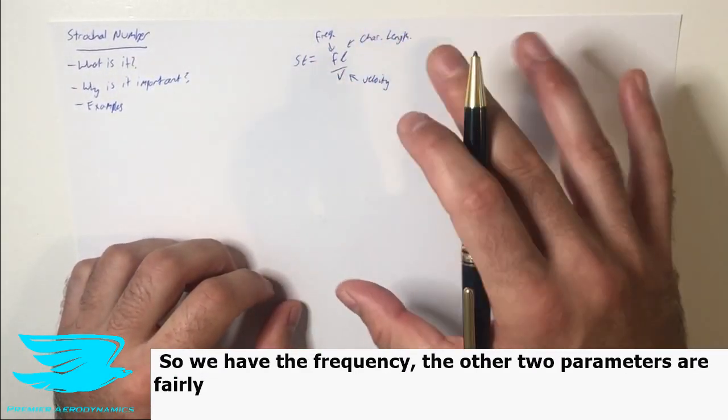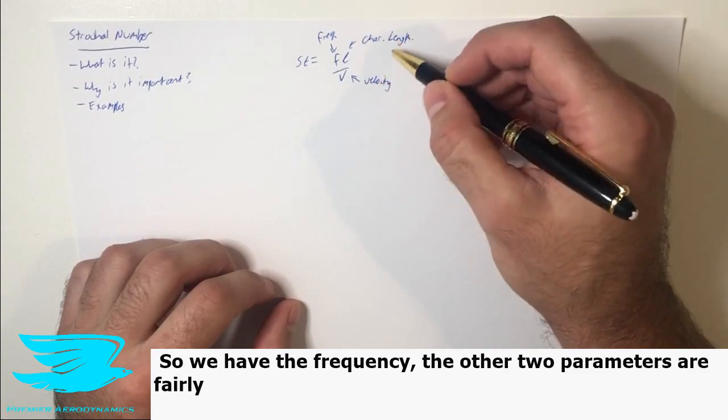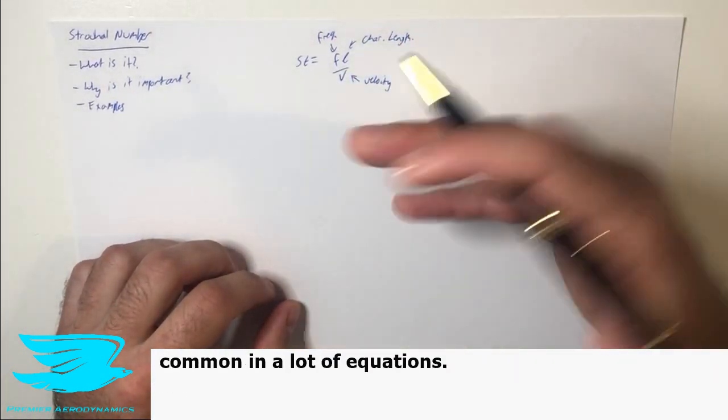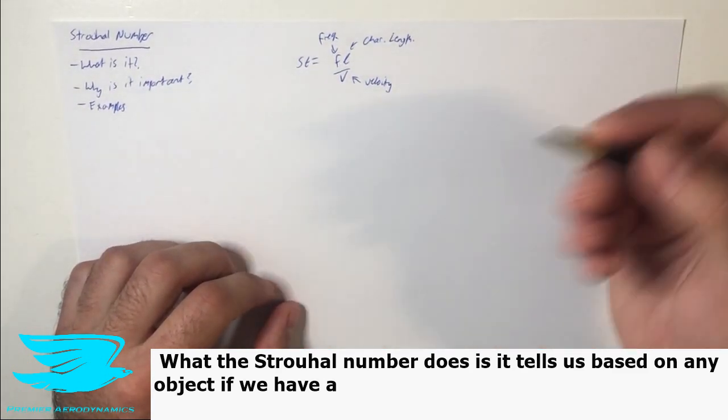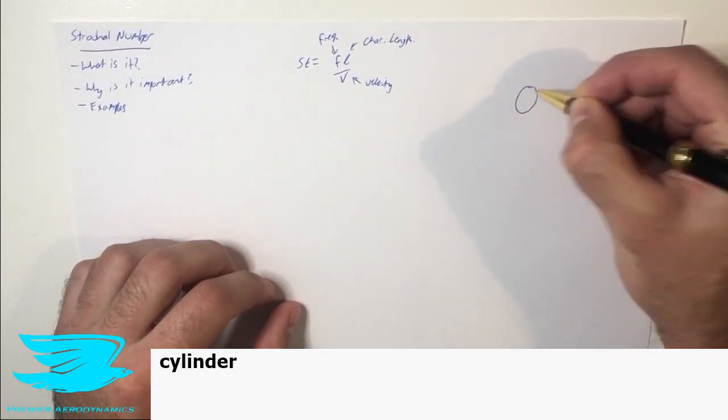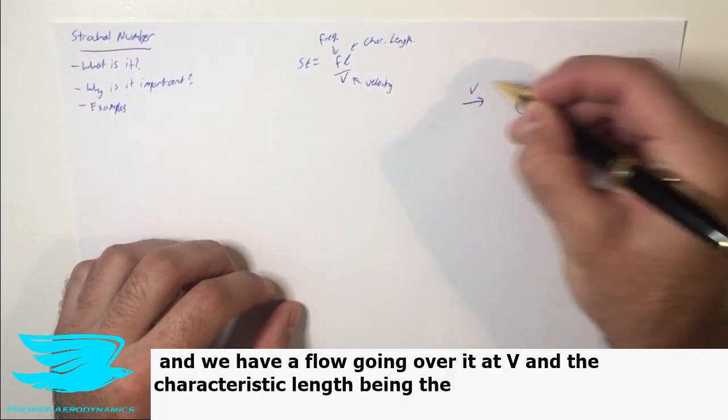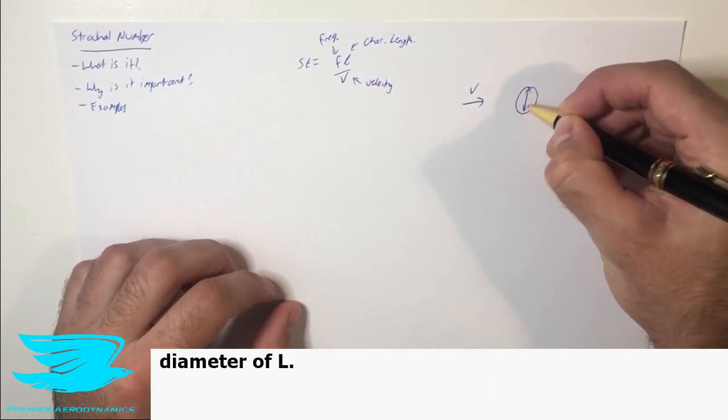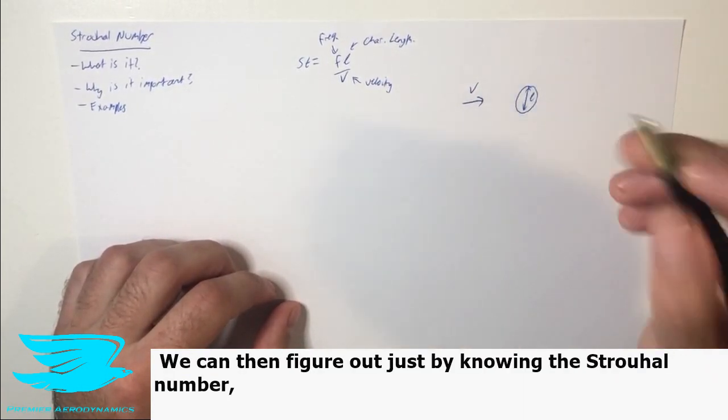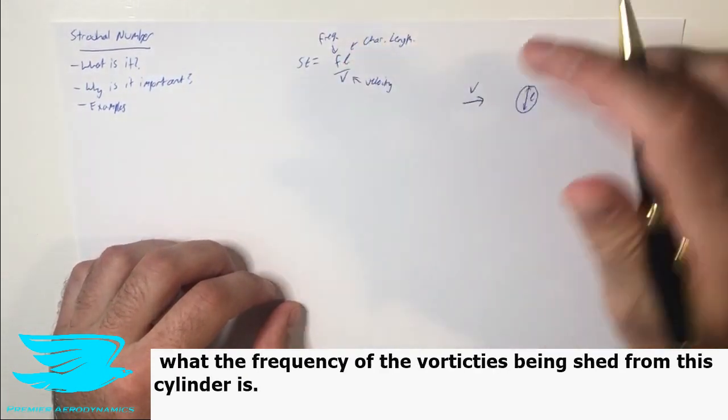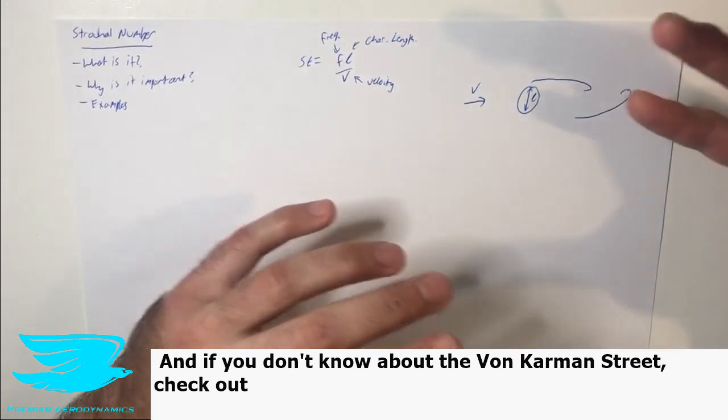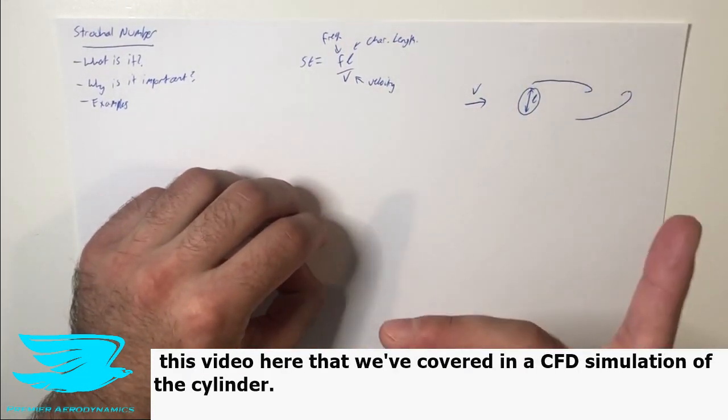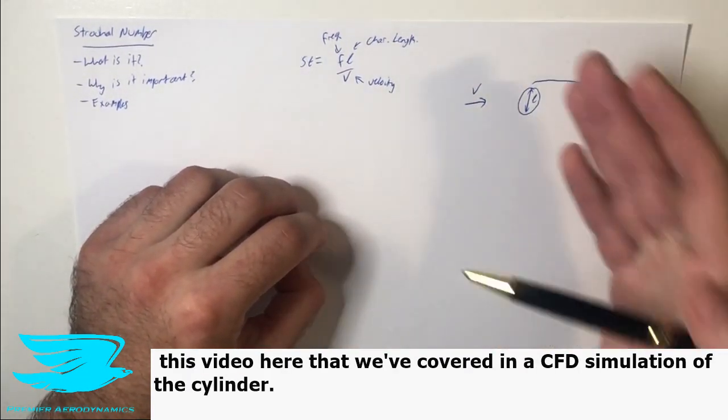So we have the frequency lumped in here. The other two parameters are fairly standard in a lot of equations. What the Strouhal number does is it tells us, based on any object, if we have, let's say, a cylinder, and we have a flow going over it at v, and the characteristic length being the diameter of L, we can then figure out, just by knowing the Strouhal number, what the frequency of the vortices being shed from this are. And if you don't know about von Karman streets, for example, check out this video here.